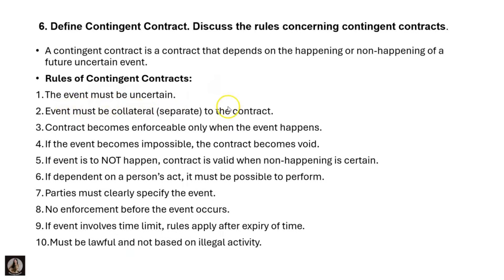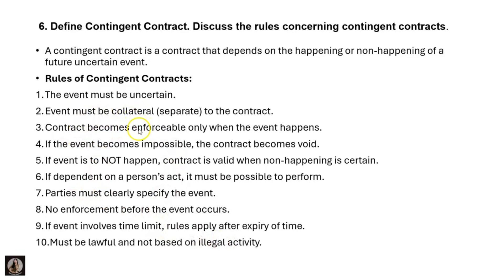Rules of contingent contracts: the event must be uncertain and separate from the contract; the contract becomes enforceable only when the event happens; if the event becomes impossible, the contract becomes void; the contract is valid when non-happening is certain; if dependent on a person's act, it must be possible to perform; parties must clearly specify the event; there is no enforcement before the event occurs; if a time limit is involved, rules apply after expiry; and the contract must be lawful and not based on illegal activity.